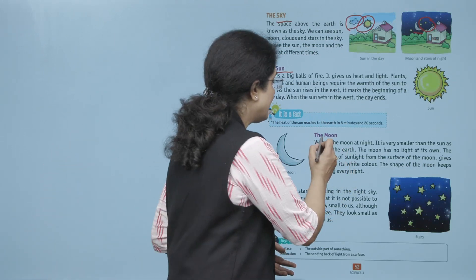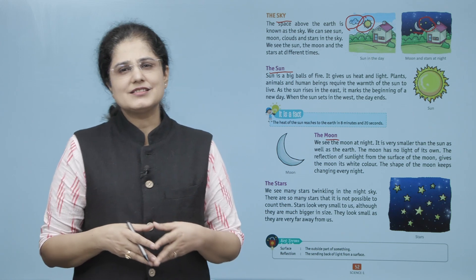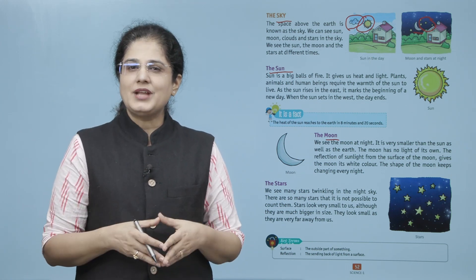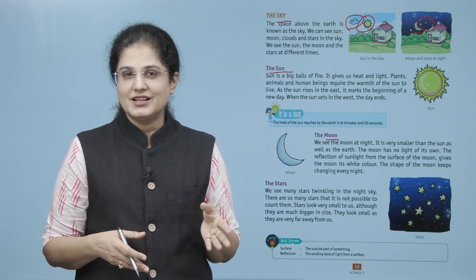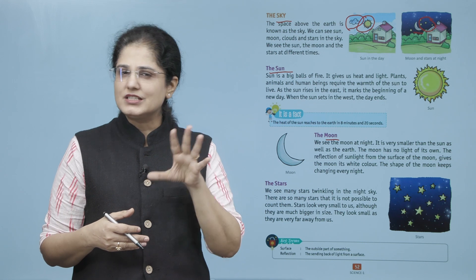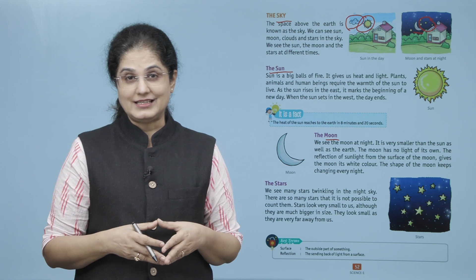Let us now look at the Moon. We see the Moon at night. It is smaller than the Sun as well as the Earth. The Moon has no light of its own. The reflection of sunlight from the surface of the Moon gives the Moon its white color. The shape of the Moon keeps changing every night.